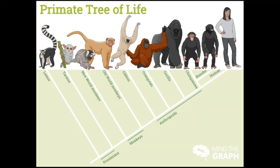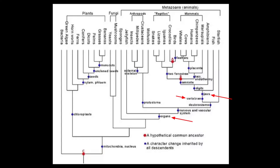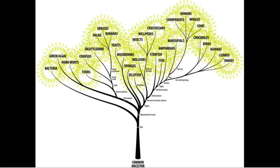In each evolutionary step, traits such as having a jaw or producing milk were passed on to offspring, allowing us humans to exist today, and explaining why we share so much DNA with chimpanzees or fruit flies.